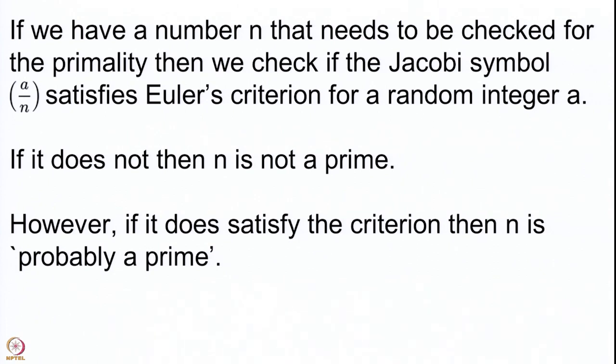This is where advanced primality tests come into the picture. The tests tell you how many integers a you should check — the most natural thing is to start checking Euler's criterion for a = 2, then a = 3, and so on. How far you need to go involves probabilistic considerations: at what probability can you conclude that n is prime? These details do not come into our syllabus and we will not discuss them.